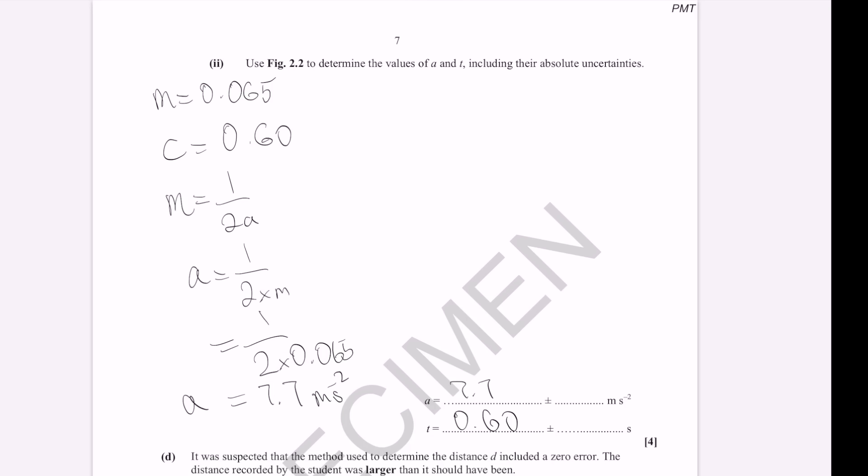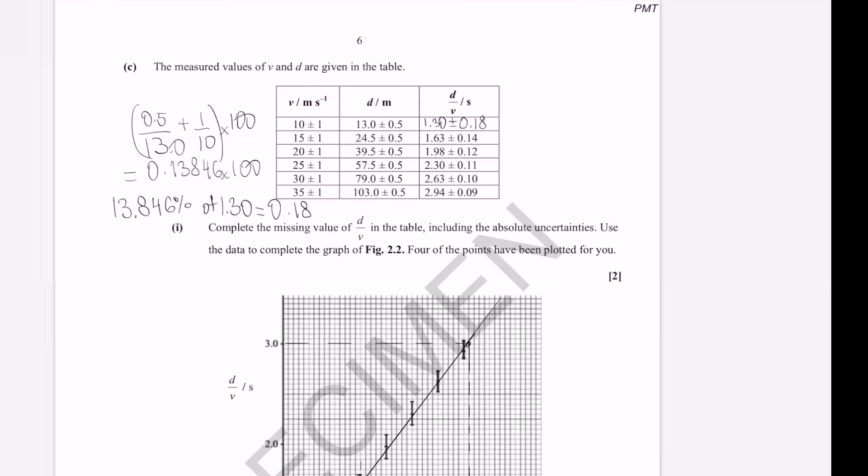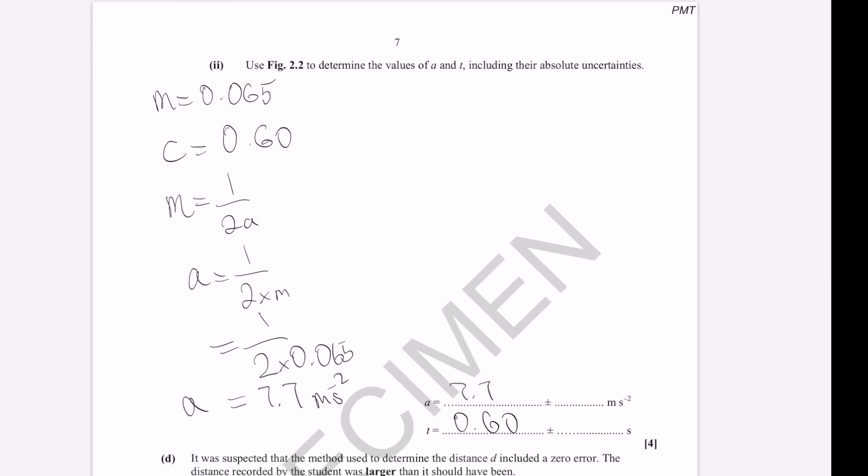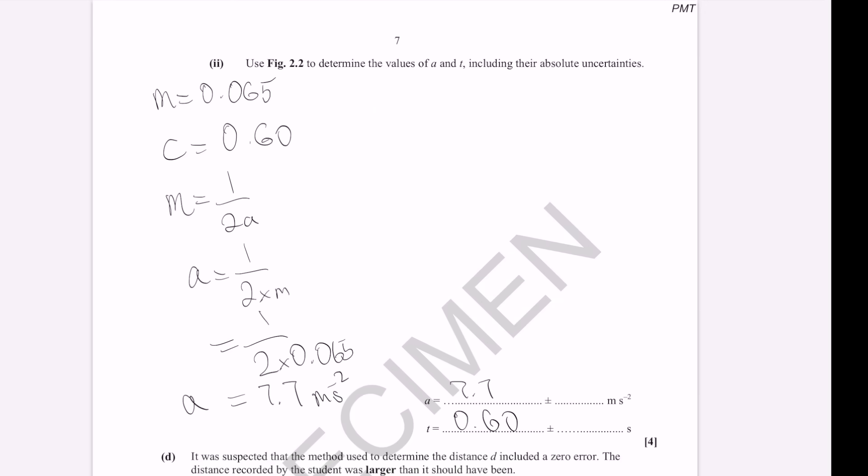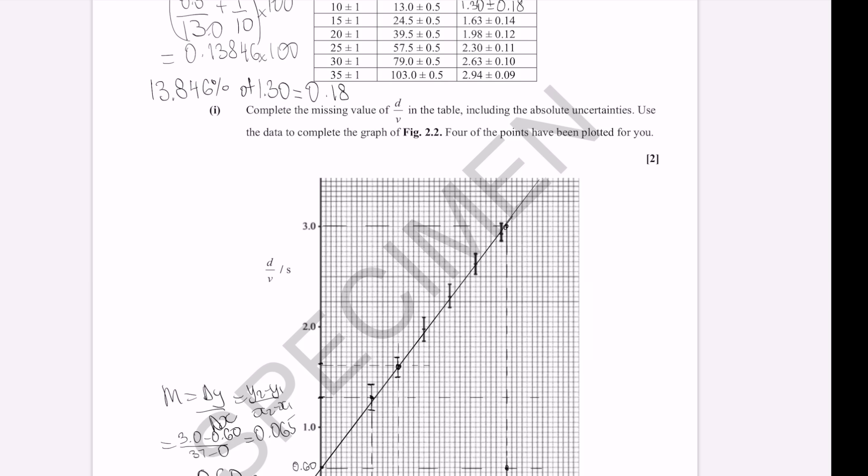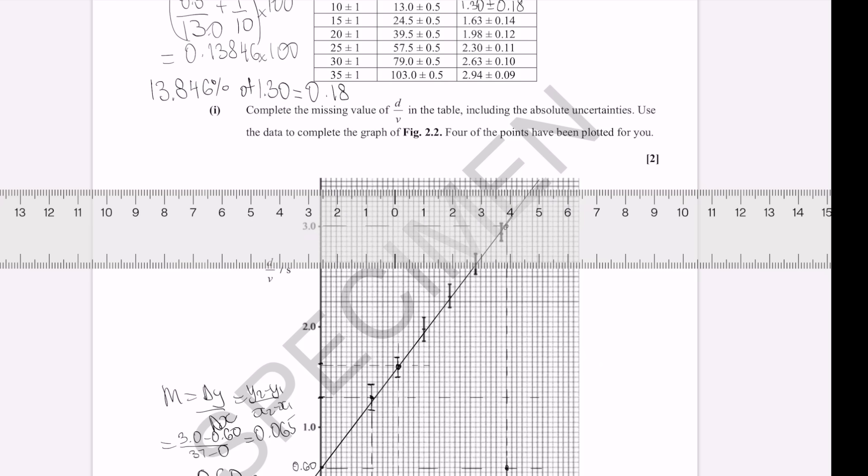Now, how do we actually work out the uncertainties? Our uncertainty in the gradient will be equal to plus or minus uncertainty that we can determine from the graph. Let's write the formula first because this here is really important. The percentage uncertainty in the gradient is equal to M best take away M worst over M best times by 100.